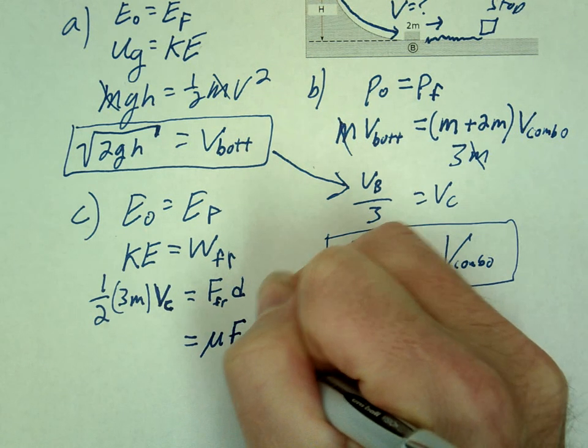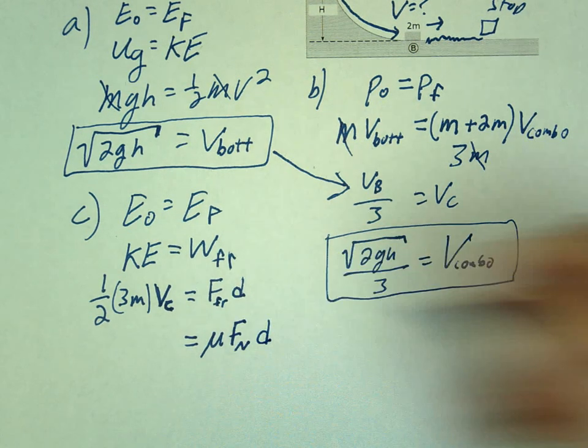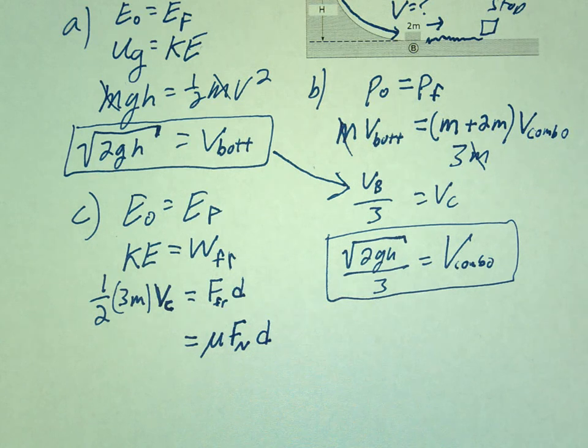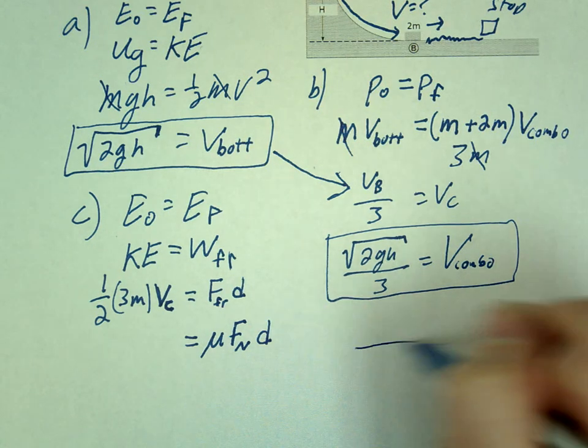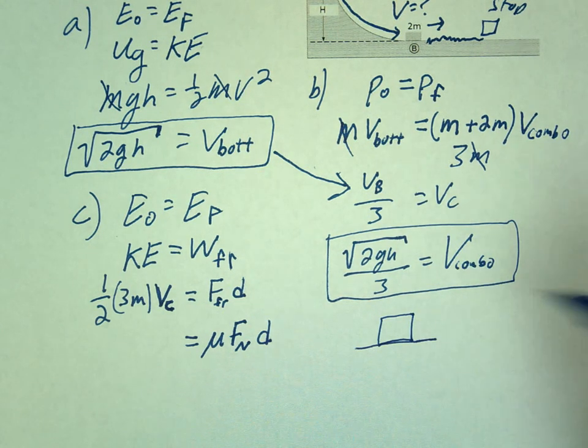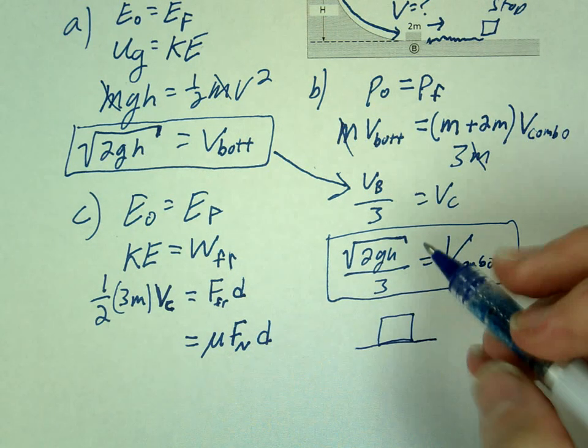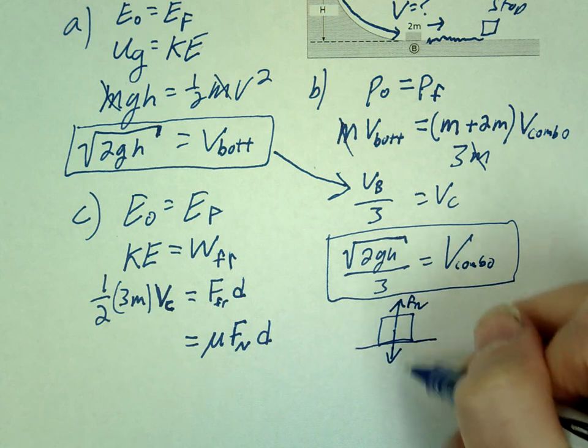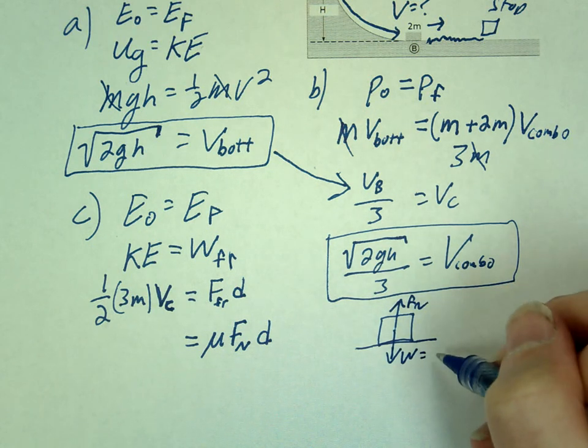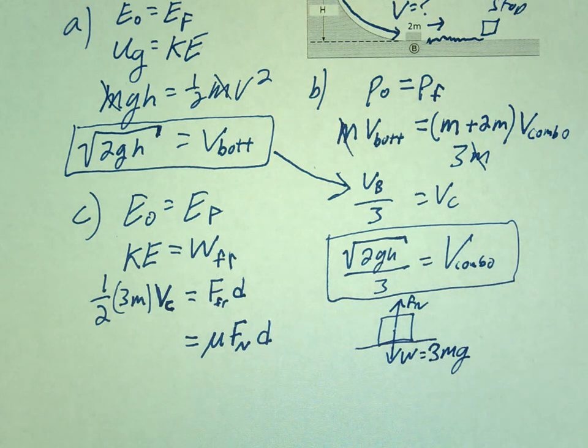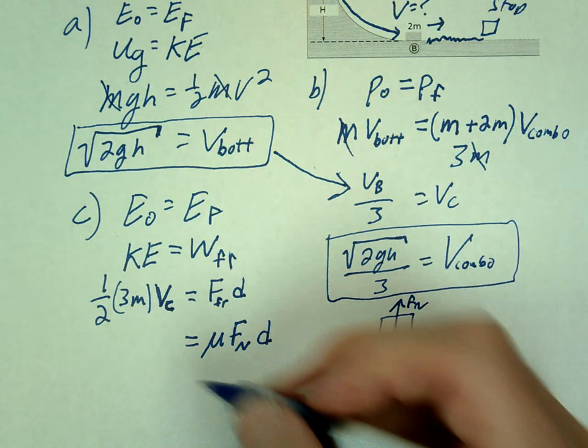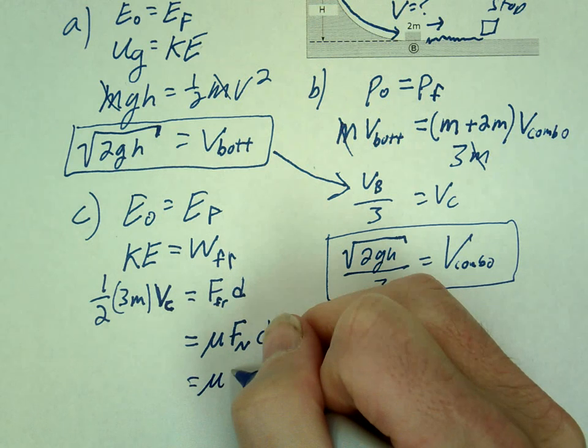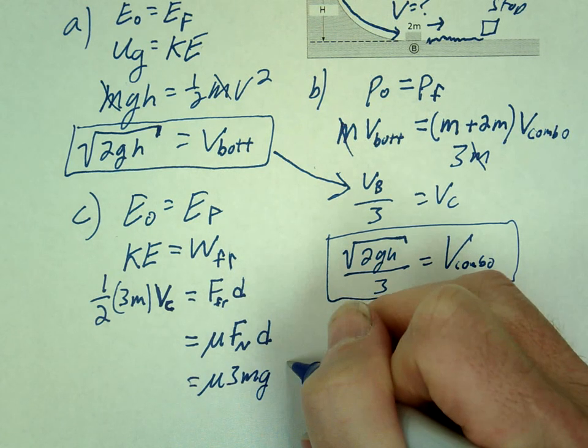Mu F normal. And then lastly, on a nice flat surface, I don't want to go through all the FBDs, but on a nice flat surface, what's true about the normal force? Equal to the weight. Right, which in this case is 3mg, because there's three masses. So we're going to go mu 3mg d.